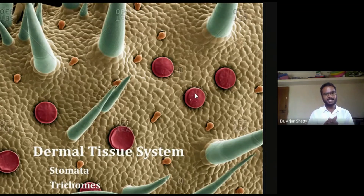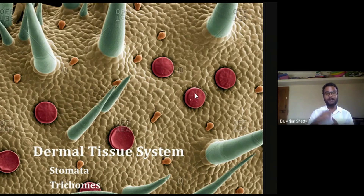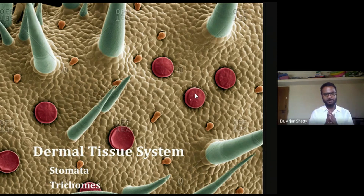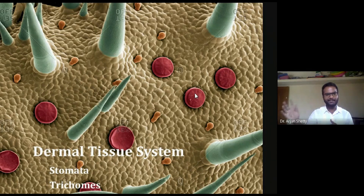In today's class we will study two important parts of tissue systems which are exclusively found only in the epidermis. The stomata and the trichomes are the two components which we can see only in the epidermal region and not anywhere else.